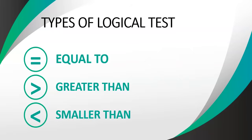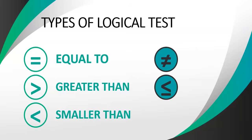If you think about it: what is the opposite of equal to? The opposite is not equal to. What's the opposite of greater than? You might say smaller than, but actually the opposite of greater than is smaller than or equal to — you must include the equal to part. And the opposite of smaller than would obviously be greater than or equal to.